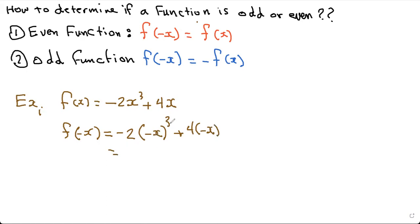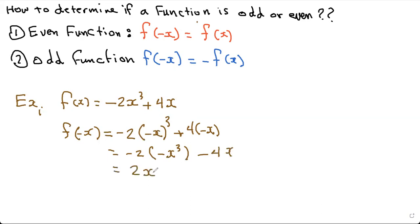Negative x cubed gives us negative x cubed. So this ends up giving me negative two times negative x cubed. And positive times negative here gives me minus 4x. Therefore, the answer for f of negative x is positive 2x cubed minus 4x.